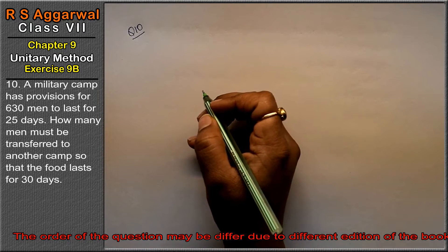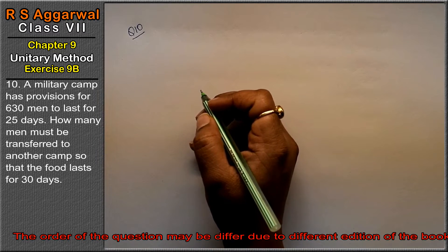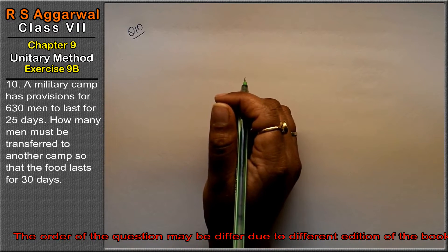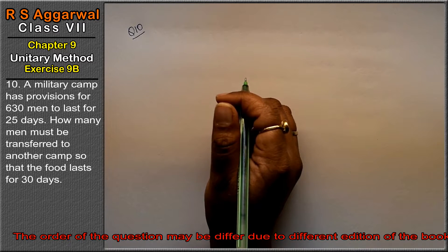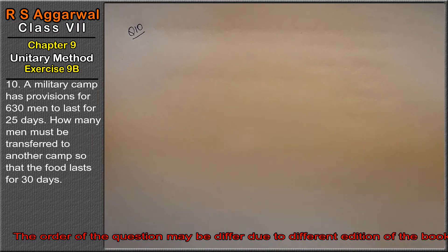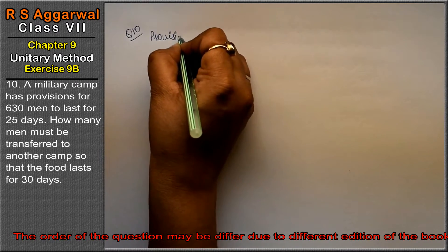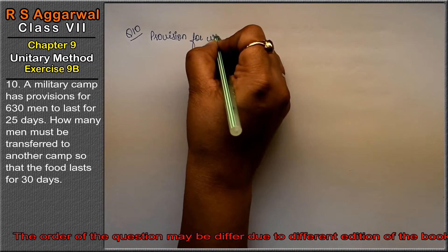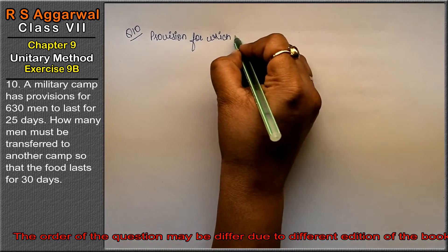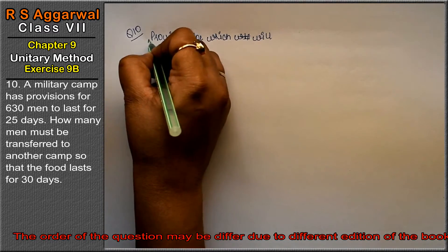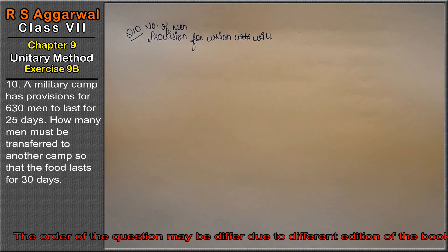Let's do question number 10 of Exercise 9B, that is unitary method. Question number 10 is: a military camp has provision for 630 men to last for 25 days. How many men must be transferred to another camp so that the food lasts for 30 days?